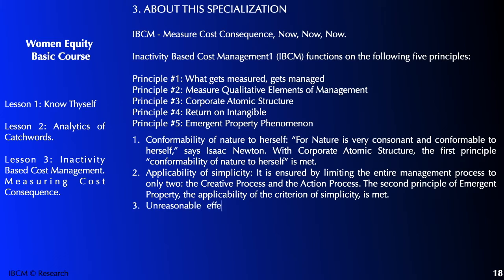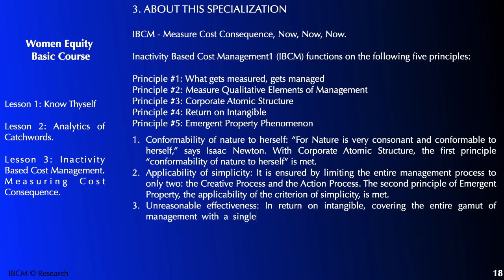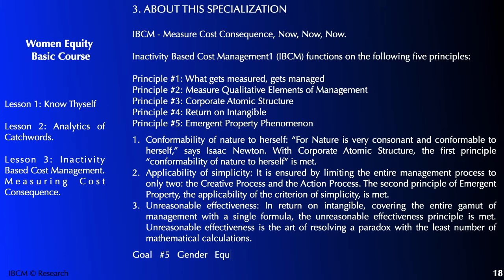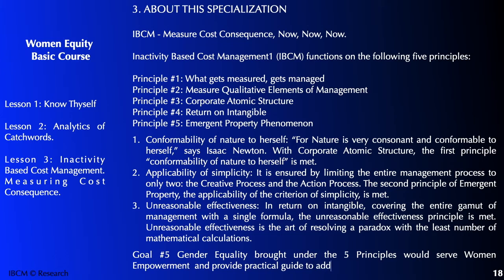Unreasonable effectiveness — return on intangible: covering the entire gamut of management with a single formula means the unreasonable effectiveness principle is met. Unreasonable effectiveness is achieved by resolving a paradox with the least number of mathematical calculations. Goal number five — gender equality — brought under these five principles would serve women empowerment and provide a practical guide to address the issues raised by the other 16 SDGs.